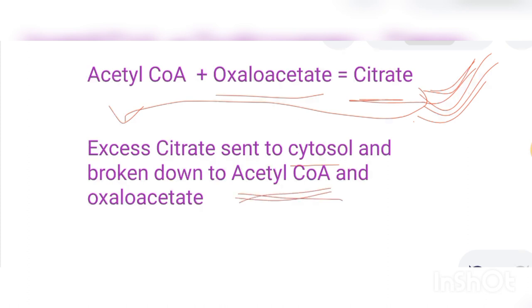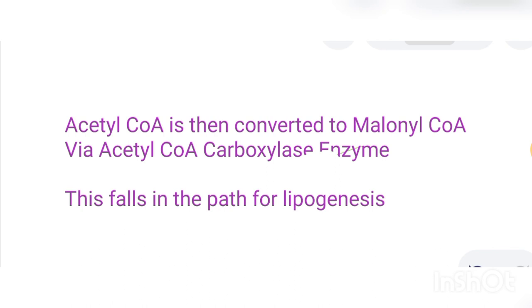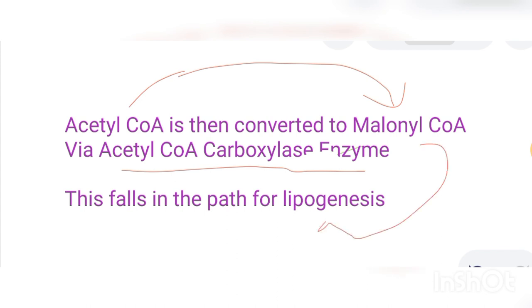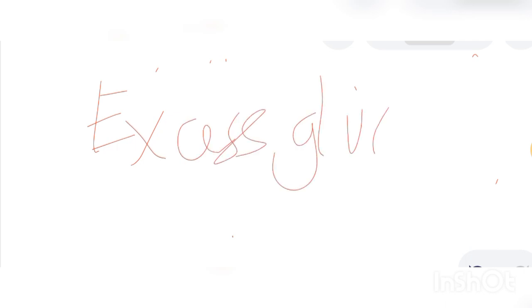In the cytosol, this citrate is cleaved back into its constituent molecules: acetyl-CoA and oxaloacetate. Because this is a time of plenty, this acetyl-CoA now undergoes carboxylation via the enzyme acetyl-CoA carboxylase, which converts acetyl-CoA to malonyl-CoA. The moment malonyl-CoA is produced, this feeds directly into the pathway for lipogenesis.